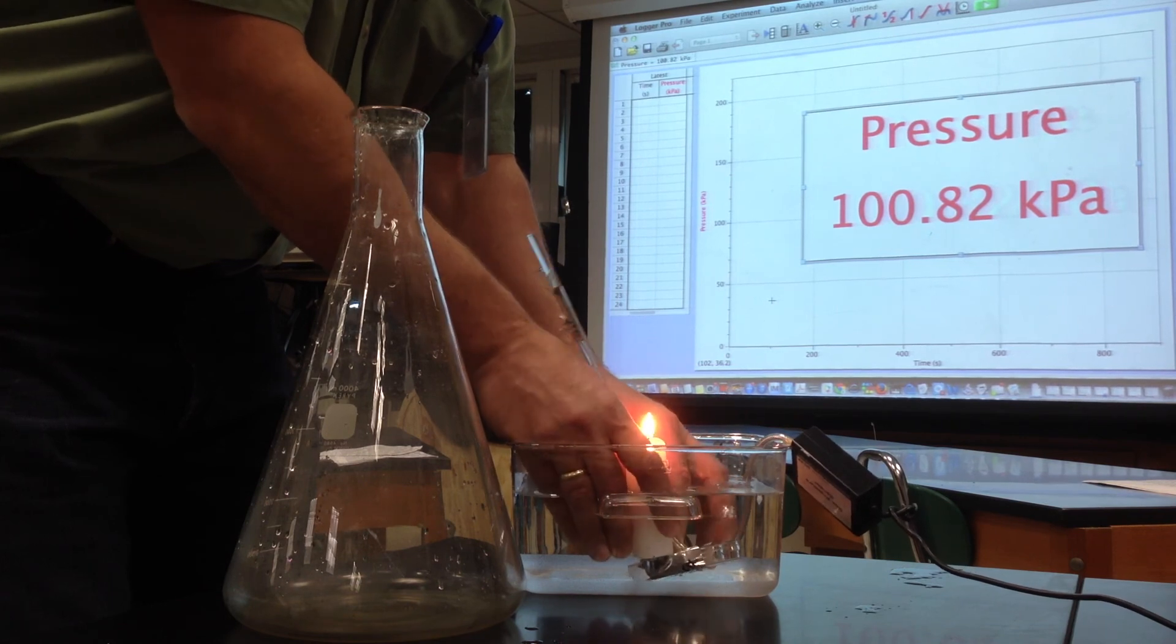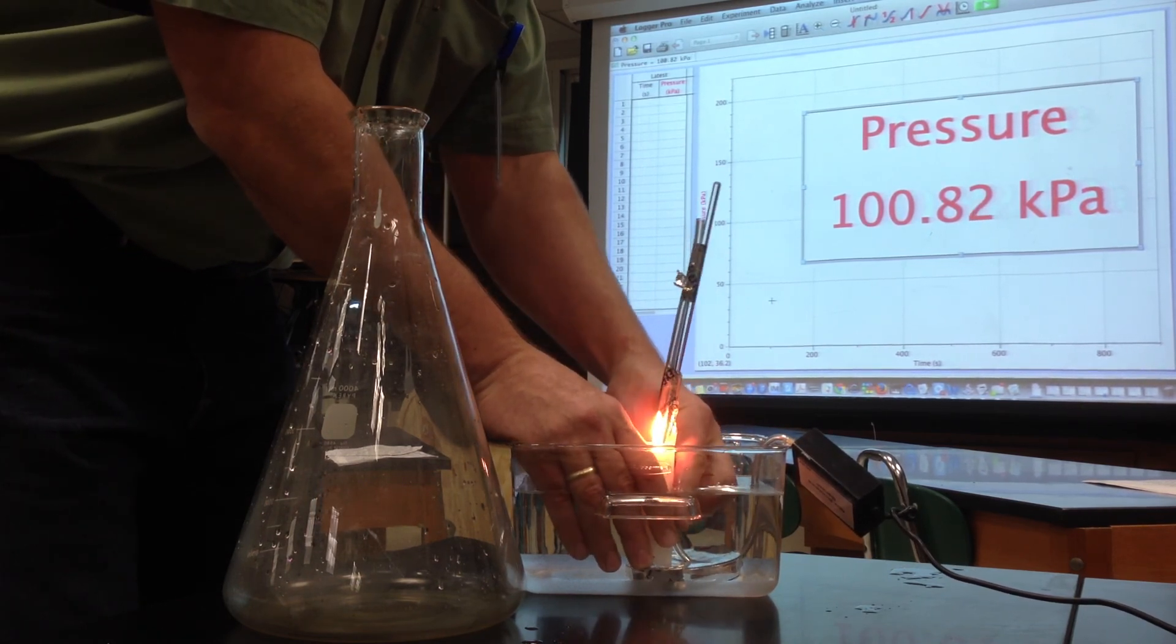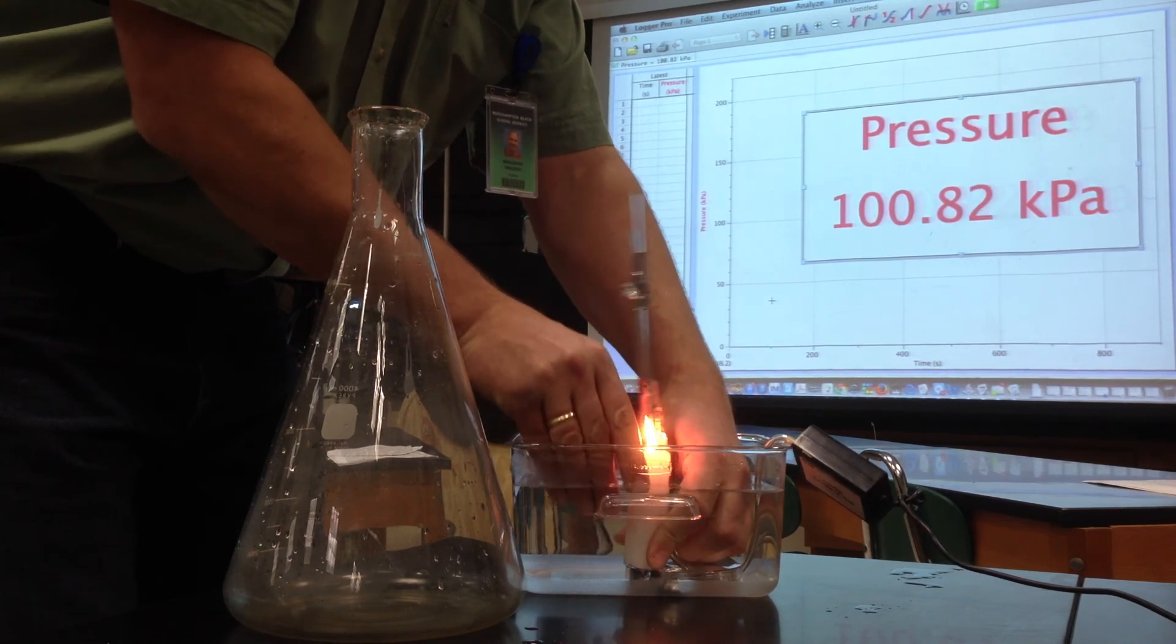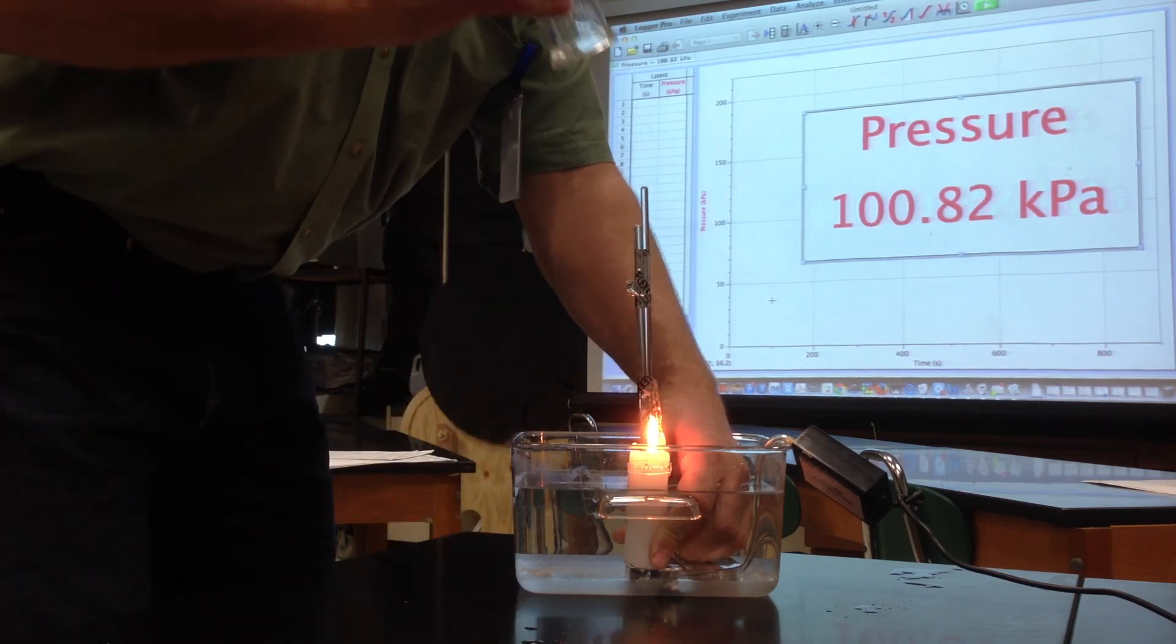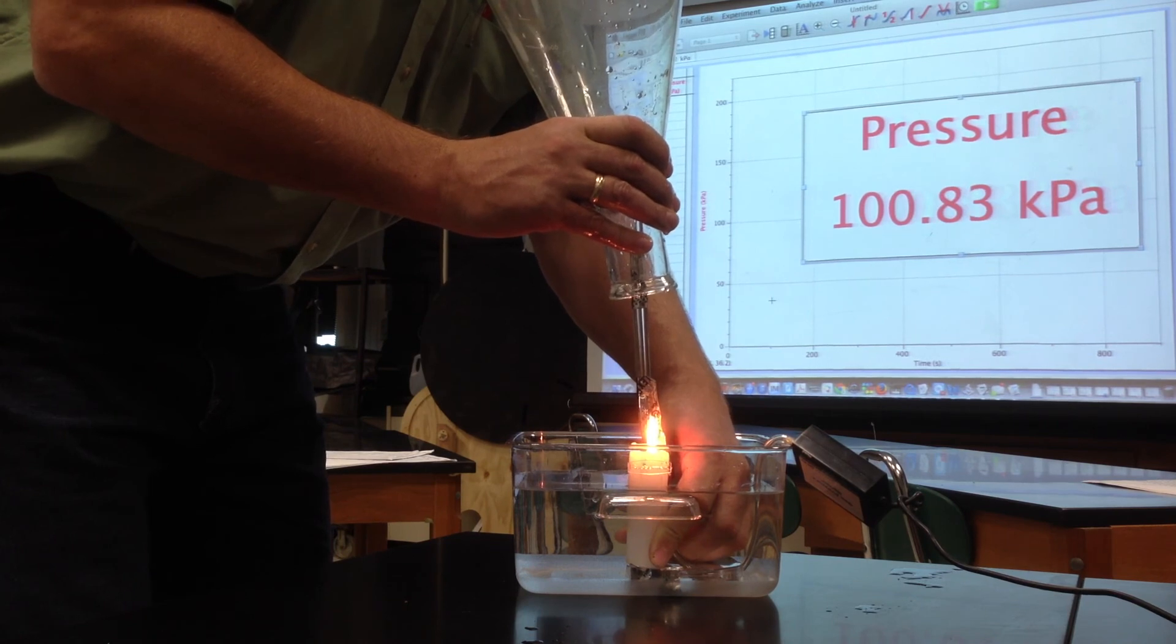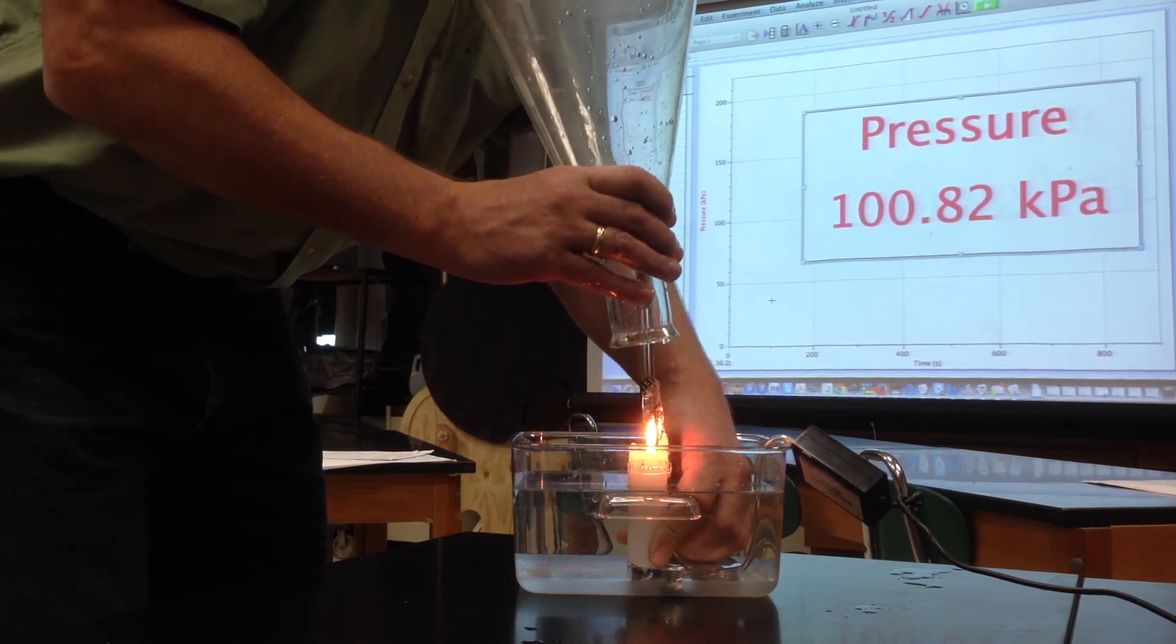It would be easy if it was just a candle but we're going after some pressure changes here. I'm a little bit uncoordinated maybe. So now I'm going to put this 5 liter Erlenmeyer flask on and please make some observations of what's happening in the flask and of course with the pressure readings above.